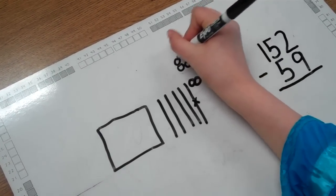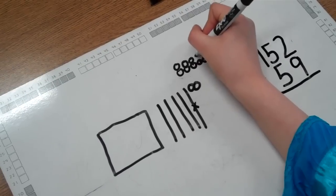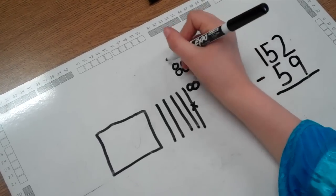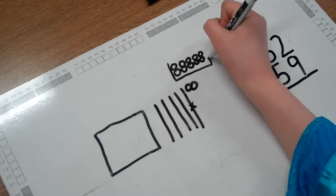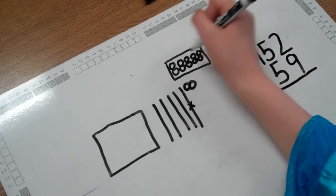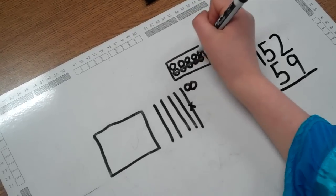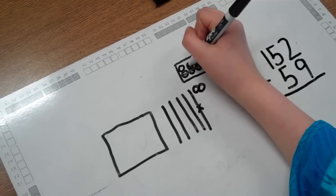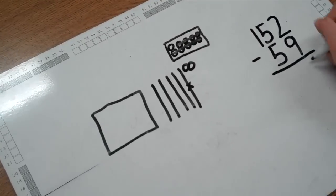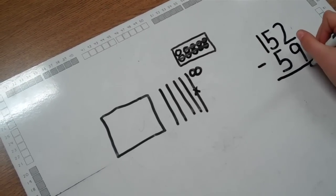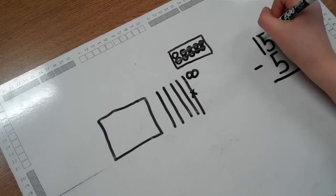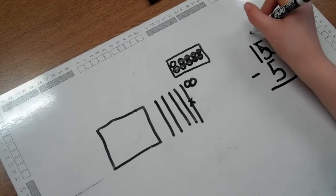We don't refer to borrowing anymore. We refer to ungrouping a 10 into 10 ones. You can see the student is showing it's still a 10 but it's represented by 10 ones, and now they're crossing out 9 ones and see they have 3 remaining.